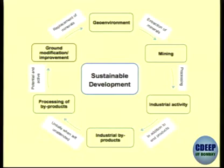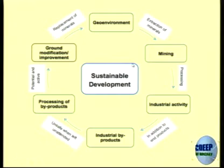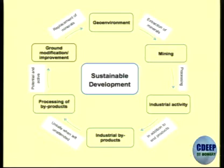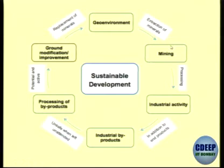What sustainability means was developed by Pratyusha, my PhD scholar. As per our understanding, sustainable development is something which completes a cycle of its generation and its disposal. One example: you have the geo-environment, which because of mining activities is becoming polluted. From the geo-environment to mining — because of extraction of minerals — you are polluting it in the process of processing these minerals, which is an industrial activity. Mining produces industrial byproducts.